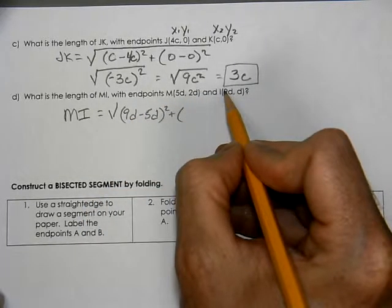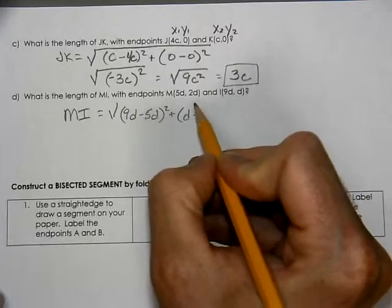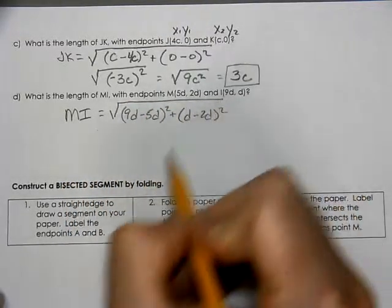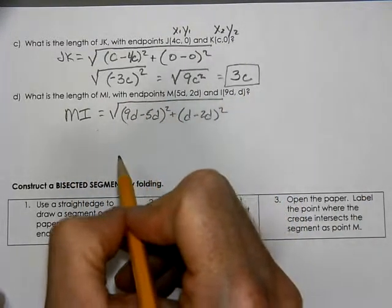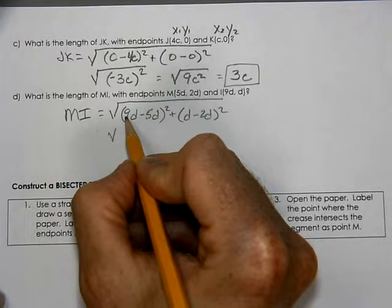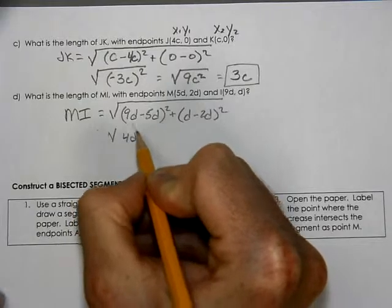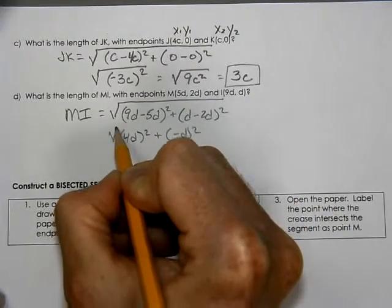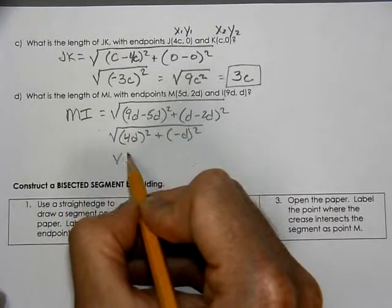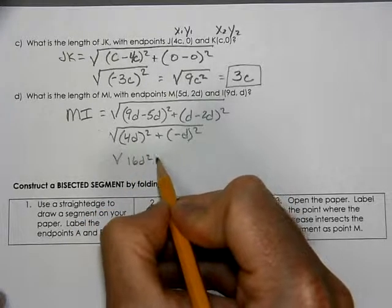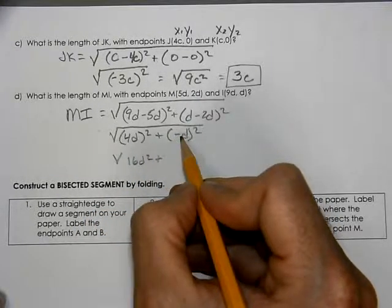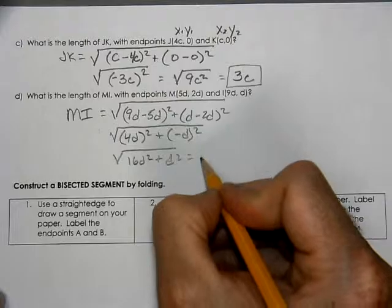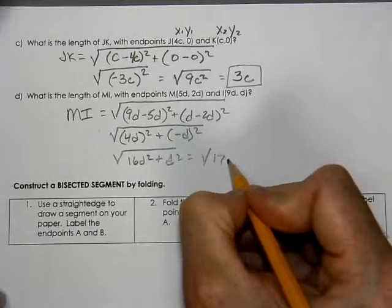9D minus 5D is 4D squared plus negative 1D squared. When you square the 4, you get 16D squared. When you square a negative, you get a positive, D squared.